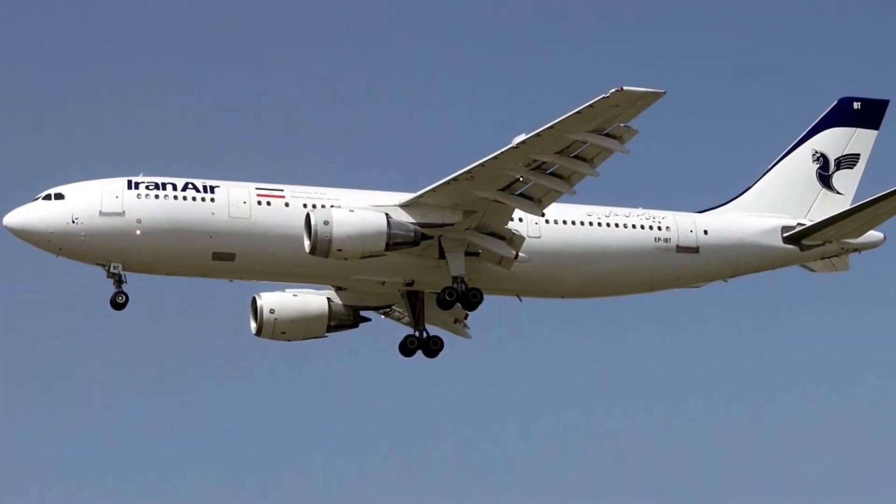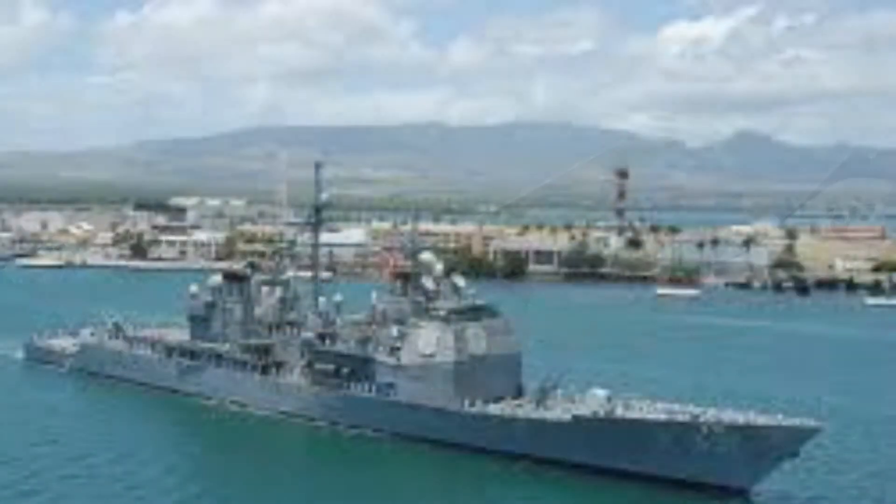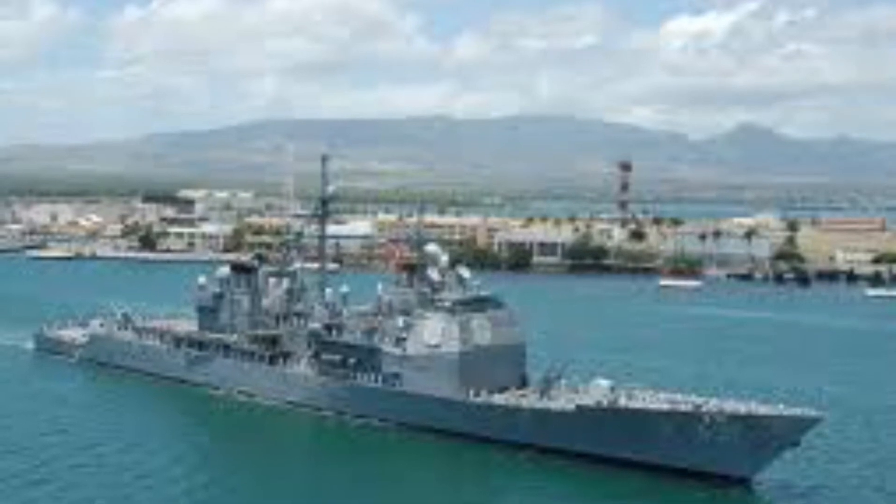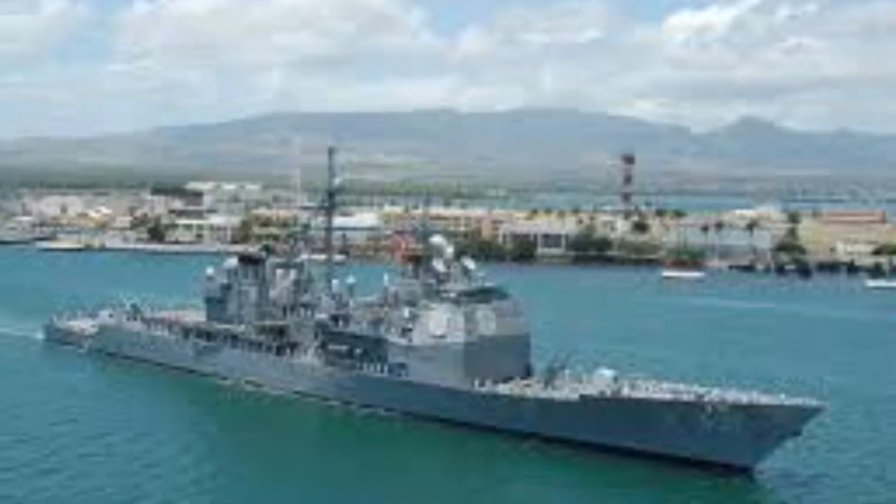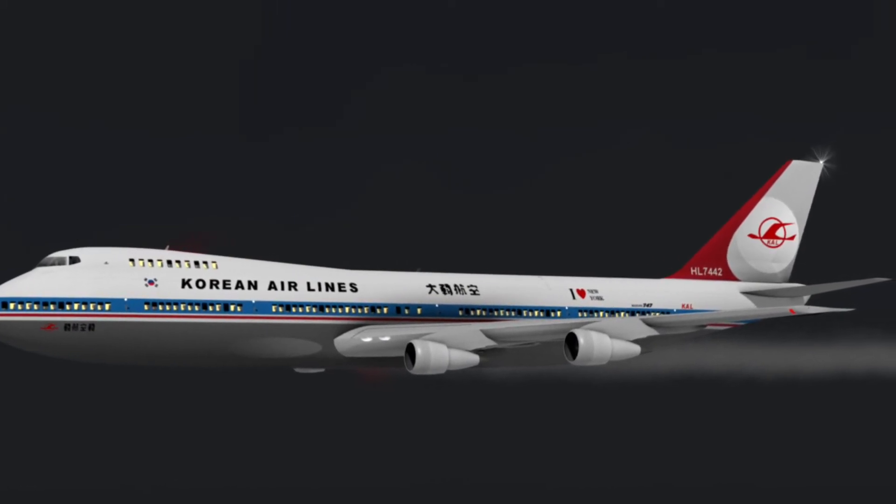On the 3rd of September 1983, a Korean Airlines Boeing 747 was shot down en route to Seoul from New York by a Russian Su-15. It had deviated from its flight plan and entered Soviet-prohibited airspace. It was thought to be a spy plane. 269 people were killed.